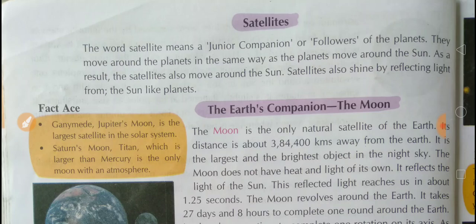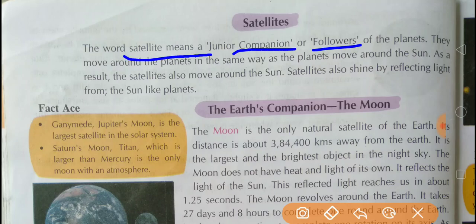Now, today we are discussing the satellite. Satellites, students — the word satellite means junior companion or followers. They are followers of the planets. Like a planet, they move around the planets the same way as the planets move around the sun. There are two types of satellites: natural satellite and man-made satellite.